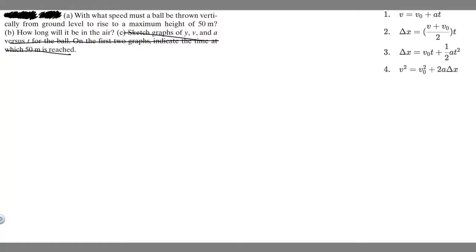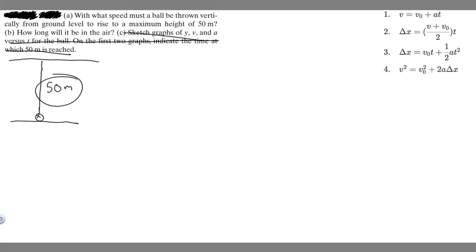So let's draw an image of what's going on here. We have this ball, and we know it's going to be thrown from ground level. So it's going to be thrown up, and we know it's going to rise to a maximum height of 50 meters. It's going to hit this maximum height, and the distance it travels is 50 meters. We're trying to find the initial velocity and the total time it takes to go up and then down — that's what B is.